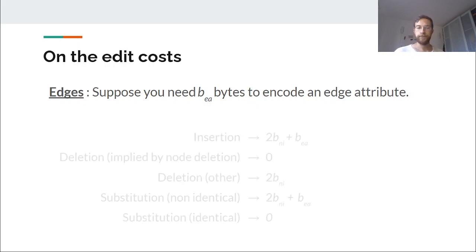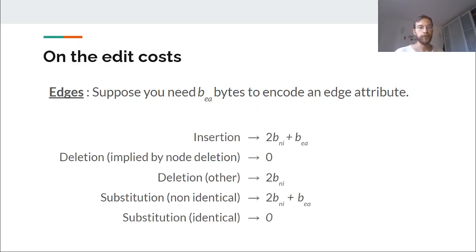On the edges, well, very similar. You just compute the number of bytes needed to encode an edge attribute and then you have these costs. They also heavily depend on the default node maps we will talk about.